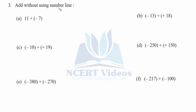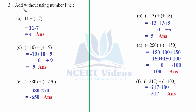Question three: add without using the number line. Part a: eleven plus minus seven. You can see it is just a simple subtraction problem — you have to subtract seven from eleven, so subtracting gives you four. This is your answer.